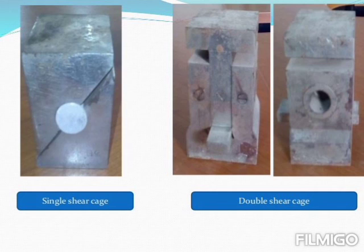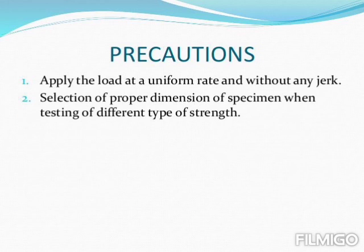This is how a single shear cage and a double shear cage look. Precautions when performing tests on a universal testing machine: apply the load at a uniform rate without any jerking, and select proper dimensions of the specimen when testing different types of strength.